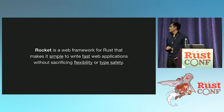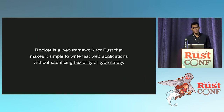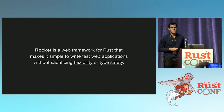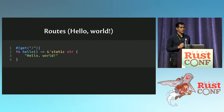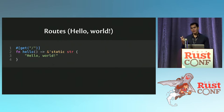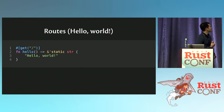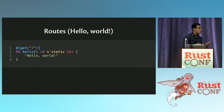So, Rocket: web framework for Rust, makes it simple to write fast web applications without sacrificing flexibility or type safety. Let's take a look at what a Rocket application looks like — this is hello world. It's four lines; this is really all you write.